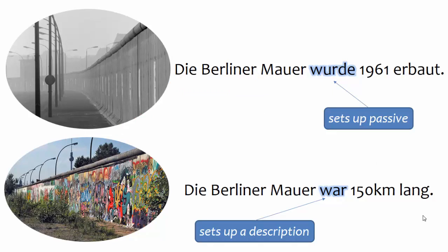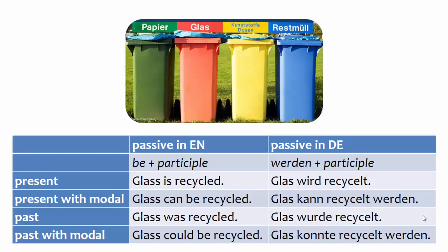Another reason English speakers get the German passive wrong is not quite understanding the difference between passive on the one hand and descriptions on the other, because English uses the verb to be for both functions. Remember that the passive indicates some kind of action. The sentence at the top of your screen uses passive to tell us that the wall was built — that's an action, not a description. The sentence below, in contrast, uses the verb sein to set up a description; here, the sentence is telling us how long the Berlin Wall was, which is a description, not an action. Again, the difference is that English uses some form of the verb to be plus the participle of the main verb, while German uses some form of werden plus the participle of the main verb.